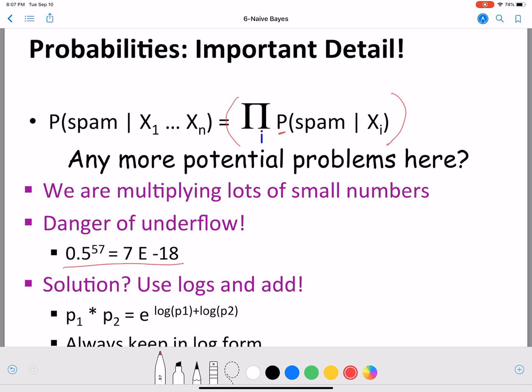If your computer cannot take those many decimal points, the solution is to use logarithm. If you use logarithm then you can convert p1 star p2, which is what we are computing in the formula, instead of that you can use log(p1) plus log(p2), e to the power log(p1) plus log(p2). So that is helpful. The log form is helpful in avoiding this underflow.